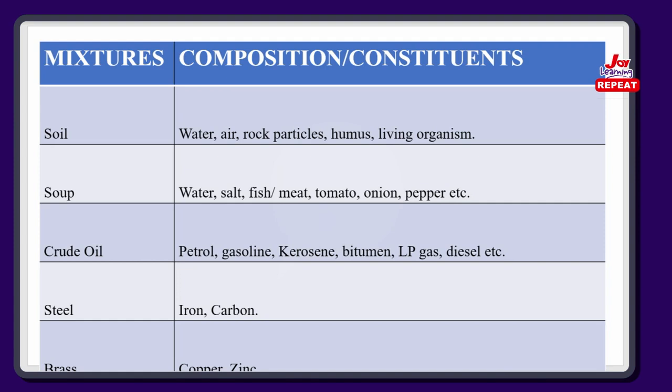Then we also have soups — I know you love soups. Whenever you want to make soups of any kind, you need: water, salt, fish or meat, tomato, onion, pepper, and if you have any other vegetables you want to add, go ahead. This is also another type of mixture.